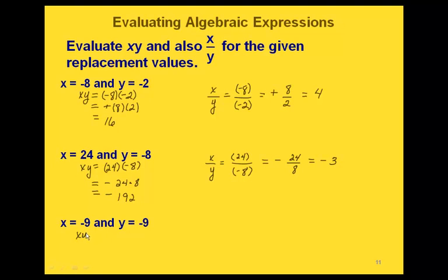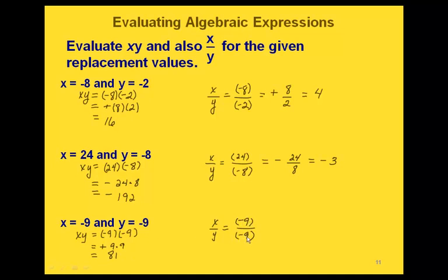Finally, with x equal to negative 9 and y equal to negative 9, we're replacing both values with negative 9. We have two numbers with the same sign, so the answer will be positive. 9 times 9 gives us positive 81. If we divide these two, we should get the same sign as in the multiplication. Negative 9 divided by negative 9 — same sign, so positive. 9 divided by 9 is 1, so our answer is positive 1.